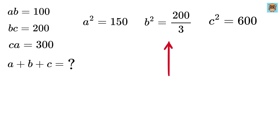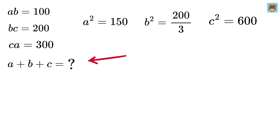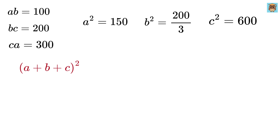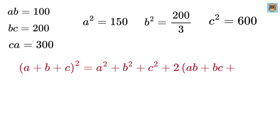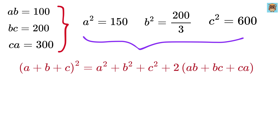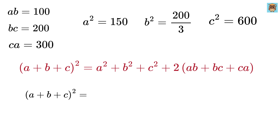This way we now have a squared equals 150, b squared equals 200 over 3, and c squared equals 600. In order to find the value of a plus b plus c, we can use the well-known identity: a plus b plus c whole square equals a squared plus b squared plus c squared plus 2 times ab plus bc plus ca.